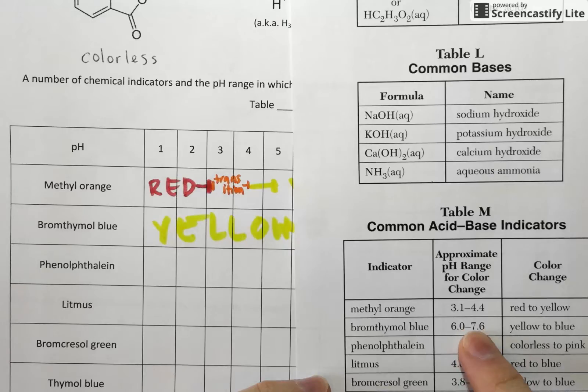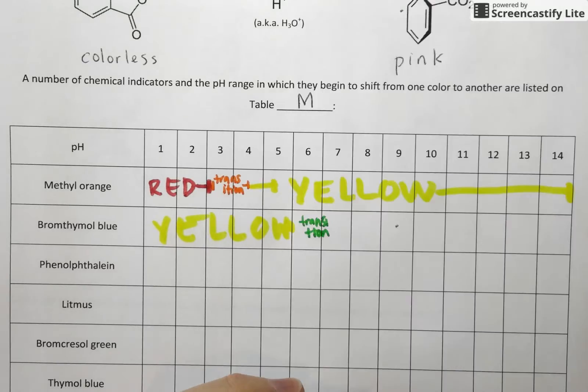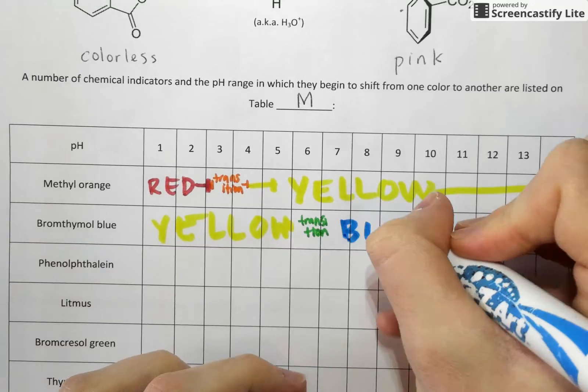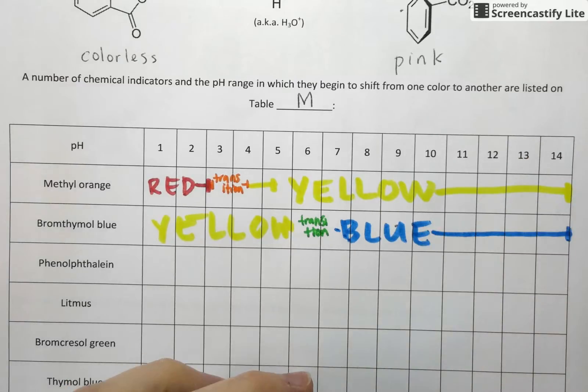So it's kind of nice that this starts changing to blue right around neutral pH. This is a very useful indicator to tell whether or not you've got something acidic or something basic because it'll be either yellow or blue. So we'll add that to our table here that above 7.6, this guy is blue.